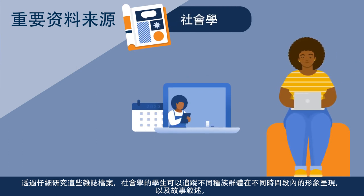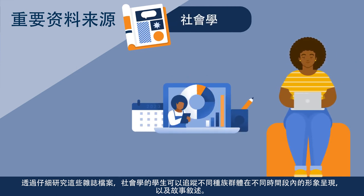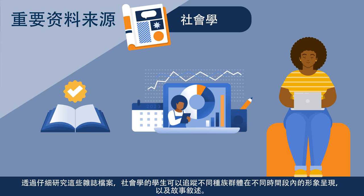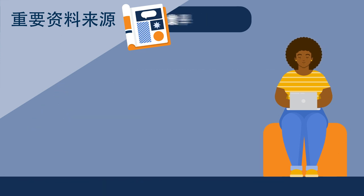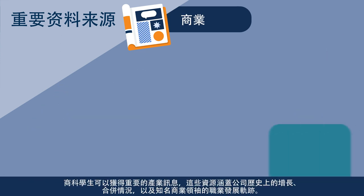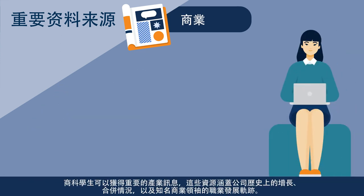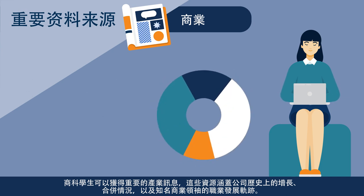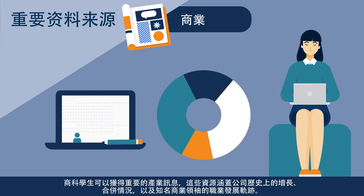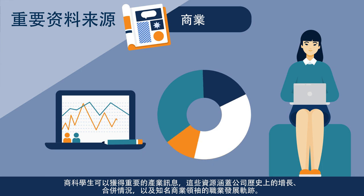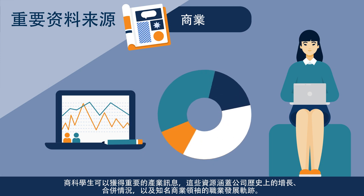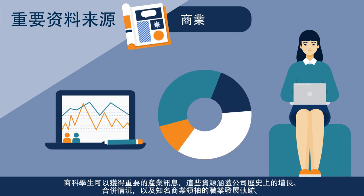Sociology students can track the representation of different ethnic groups through the years in imagery and stories. Business students can access critical industry information including company growth and mergers throughout history, as well as the career trajectories of high-profile business leaders.